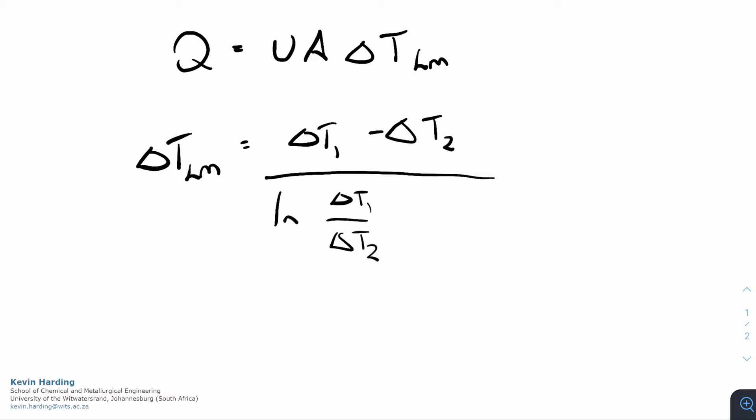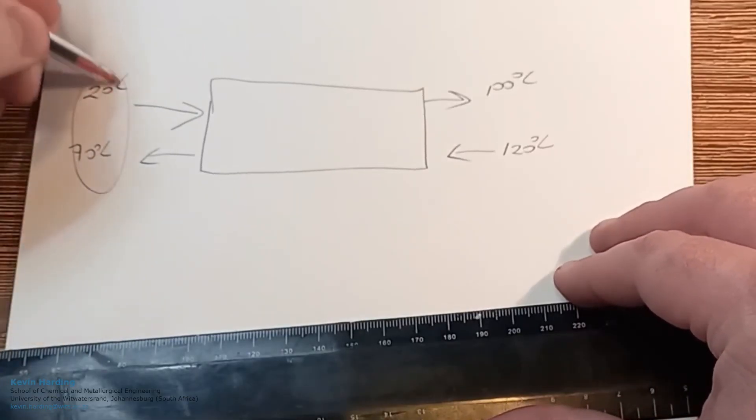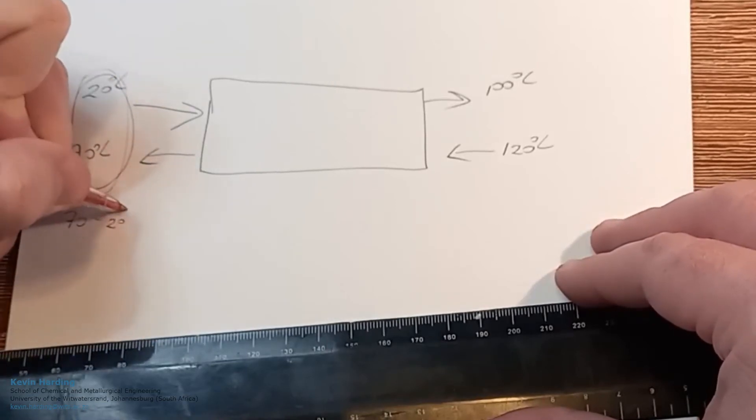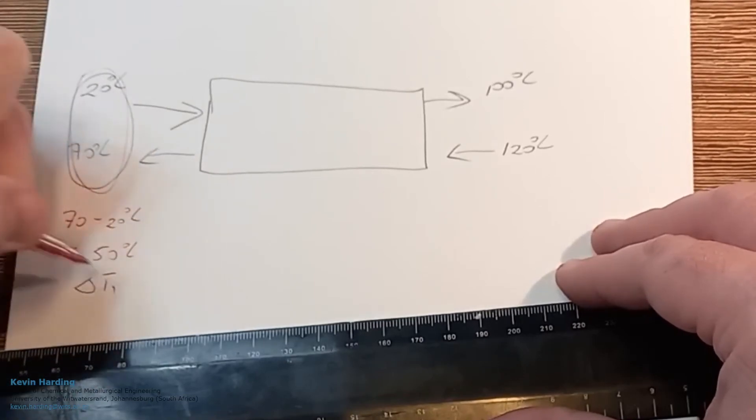So quickly, what exactly are these in our question? Delta T1, if we take the temperatures at the left, is going to be 70 minus 20 degrees Celsius, which is going to give us 50 degrees Celsius for delta T1.